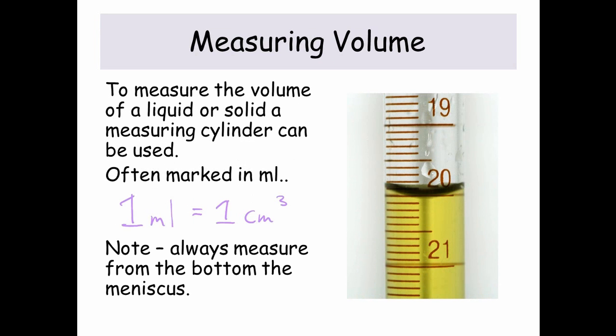And Measuring Volume. To measure the volume of a liquid or a solid, a measuring cylinder can be used. Often they're marked in milliliters, but 1 milliliter is equal to 1cm cubed. And note, always measure from the bottom of the meniscus.